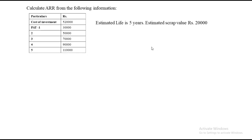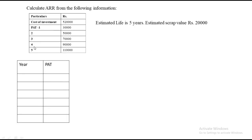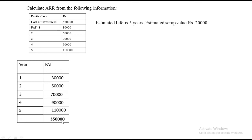First, we need to calculate a table with years and profit after tax. We have 5 years: 1, 2, 3, 4, 5. The profit after tax values are 30,000; 50,000; 70,000; 90,000; and 1,10,000. Next, we find the total of PAT by adding all values, which gives us 3,50,000. That is step number 1 — finding the total profit after tax.